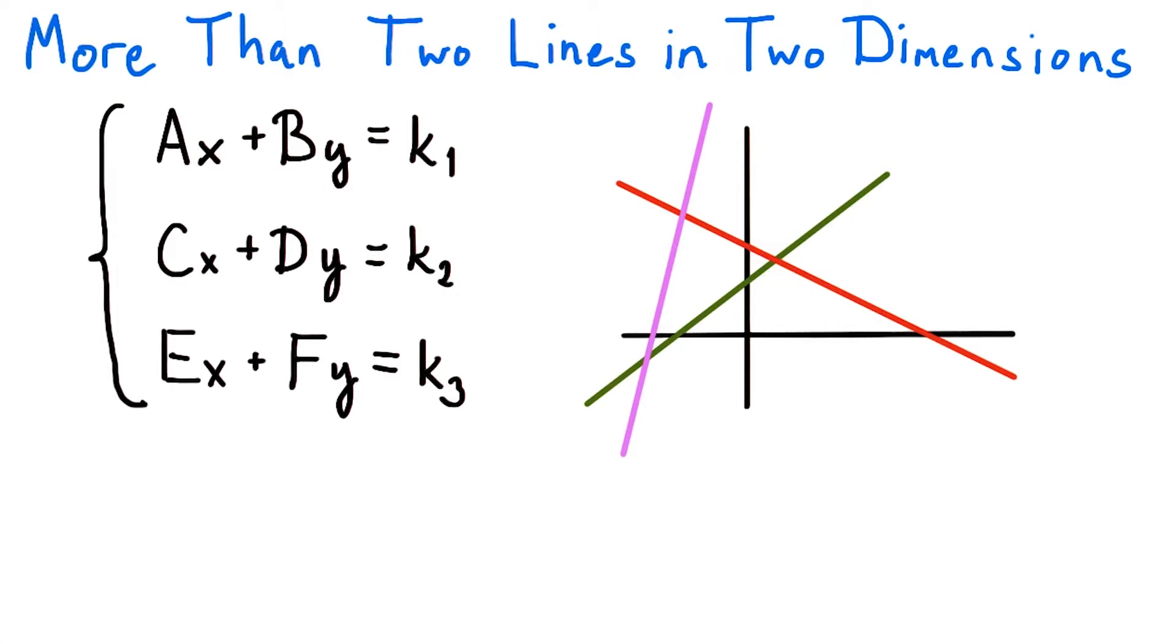Since systems of linear equations are questions about common intersections, that is, points that are common to all the objects being considered, this latter case would have an empty common intersection.